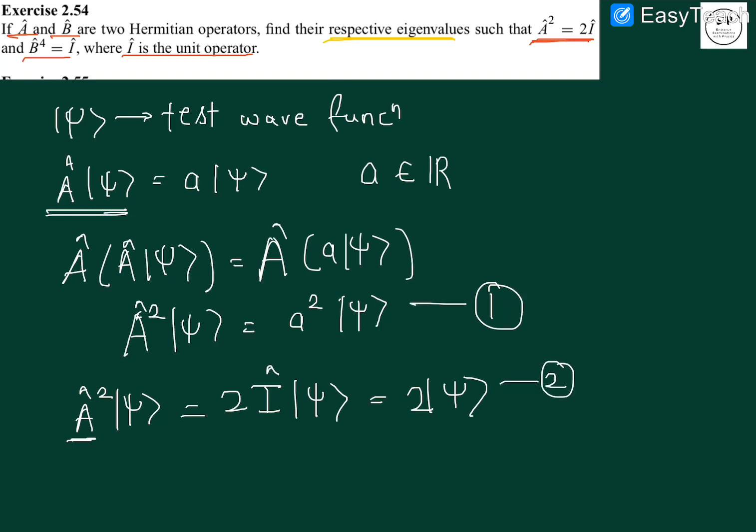Now since we have the left hand side of one and two equal, we can compare the eigenvalues. So we have a square which is equal to two, that gives us a equals to plus minus root two. Note that both eigenvalues plus root two and minus root two both are real.